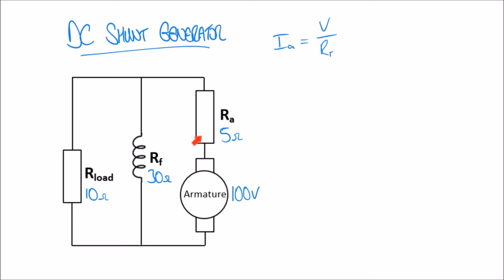Starting at the armature, we first go through a resistance of 5 ohms, but then we reach a junction where the current splits — it can go either through the 30 ohms of the field windings or through the 10 ohms of the load. So the load and the field windings are in parallel with one another. The total resistance Rt is 5 ohms plus 30 ohms in parallel with 10 ohms. If you're not sure how to work out resistors in parallel, I recommend going back to the video where we covered that.